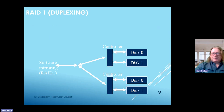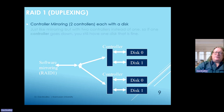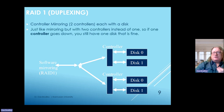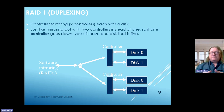Let's talk about duplexing. In RAID 1 duplexing, we're controlling two different sections—two controllers each mirroring a disk. It's like mirroring, but with two controllers instead of one. So if one controller fails, you still have the other one on that disk and everything is fine.